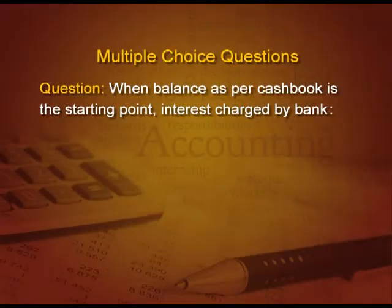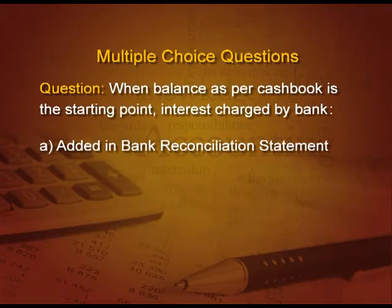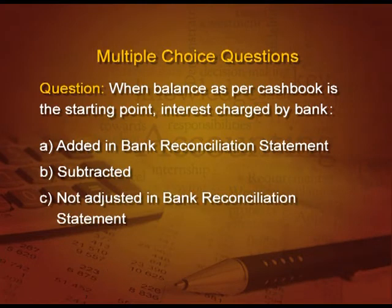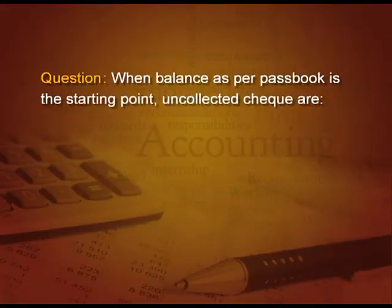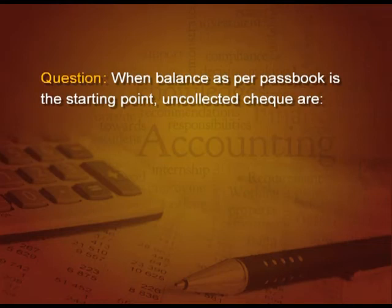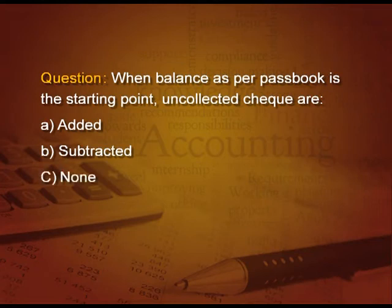MCQ question 1: When balance as per cash book is the starting point, interest charged by bank will be — A) added in BRS, B) subtracted, C) not adjusted, D) none of the above. Interest charged by bank has reduced the pass book balance, so now you have to subtract. The answer is B, subtracted. MCQ question 2: When balance as per pass book is the starting point, an uncollected check — meaning you have deposited it but it has not been credited in the bank — will be A) added, B) subtracted, C) none of these. It will be added, because in the pass book you have not added it yet.